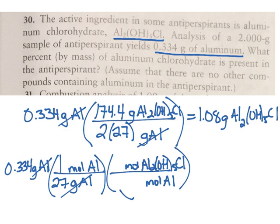I can get the ratio from the subscript. If I look at the subscript, there's 2 moles of Al in every 1 mole of the entire thing.